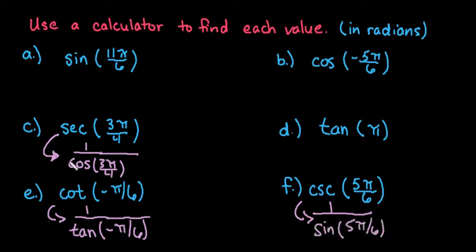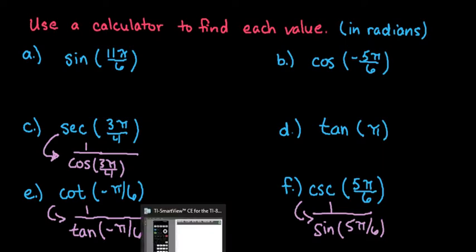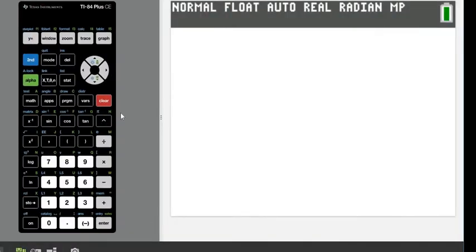So what I'm going to do is just go into my calculator, and I'm going to plug in a, b, and c, so sine, cosine, and secant. Sine of 11 pi over 6, cosine negative 5 pi over 6, and then for the secant 3 pi over 4, we're going to plug it in as 1 divided by cosine. And then I will come back and write the answers, and then we'll do the following three.